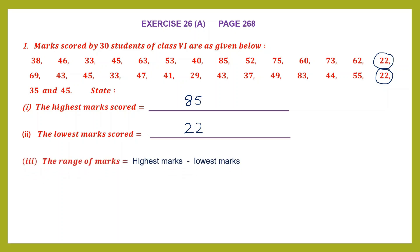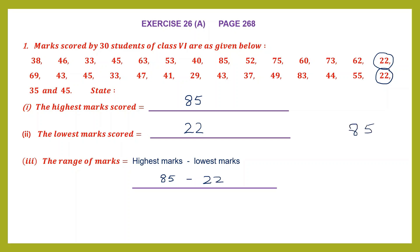Now we've been asked to find the range of marks. Range of marks is found by subtracting the highest marks and the lowest marks. The highest marks scored was 85 and the lowest is 22. Let's subtract: 5 minus 2 is 3 and 8 minus 2 is 6. So the range of marks is 63.